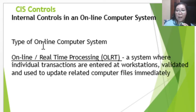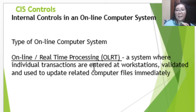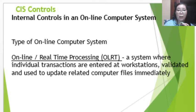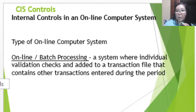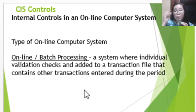The different types of online computer systems include the following. Online real-time processing is a system where individual transactions are entered at workstations, validated, and used to update related computer files immediately. Online batch processing is a system where individual validation checks are performed and transactions are added to a transaction file containing other transactions entered during the period, with processing done for similar transactions all together.